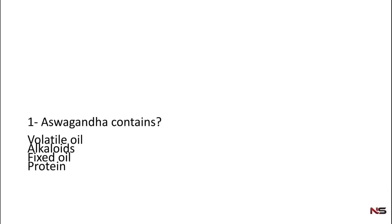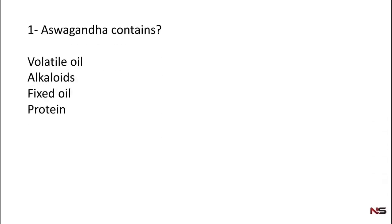The first question: Ashwagandha contains — options are: volatile oil, alkaloids, fixed oil, protein. Please write down your answer.